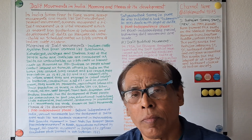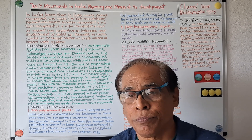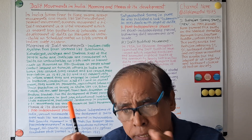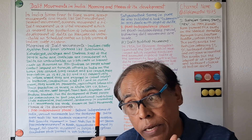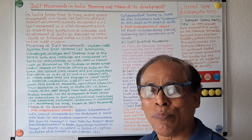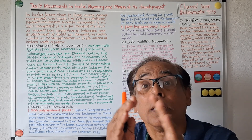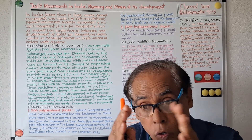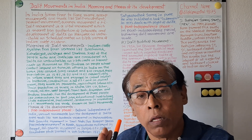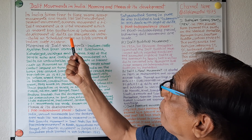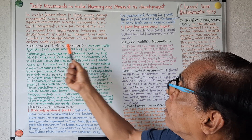In India, from time to time, various group movements are made, like Women's movements, environmental movements, Kisan movements, and Dalit movements. Among these, Dalit movement is a very vital type of movement. Dalit movement means it is a movement for the interest as well as for the development of Dalits. Dalit means Harijans, or Untouchables, or Scheduled Castes, or the fifth varna of the Indian Caste System.